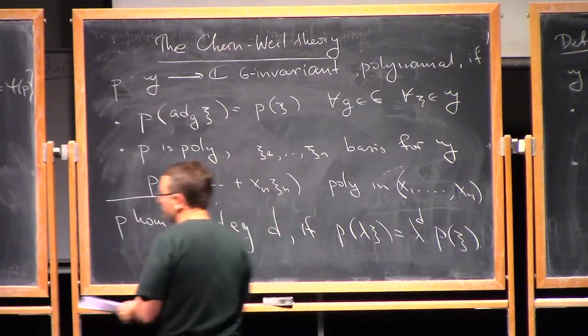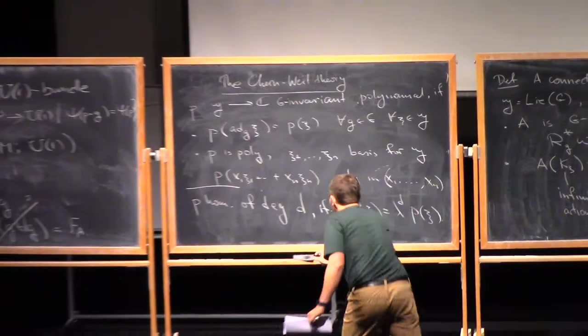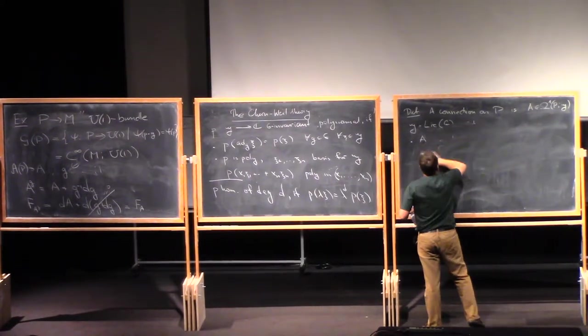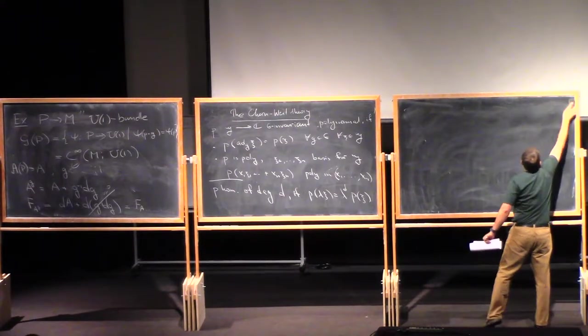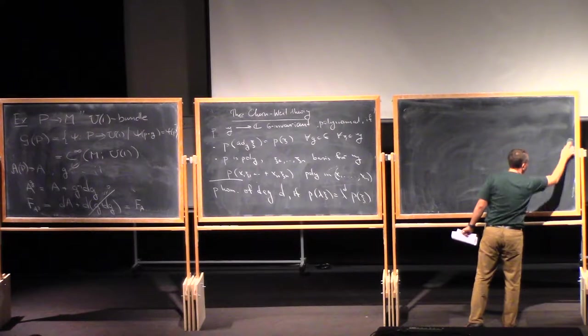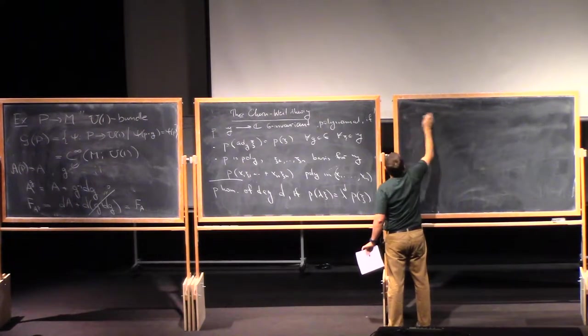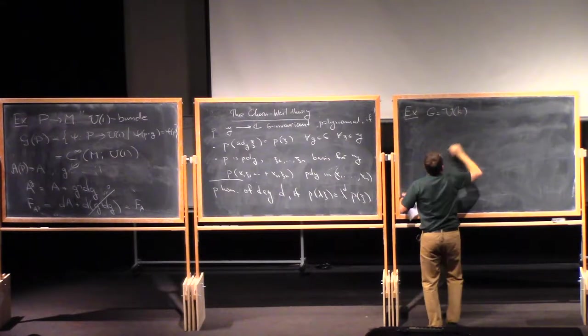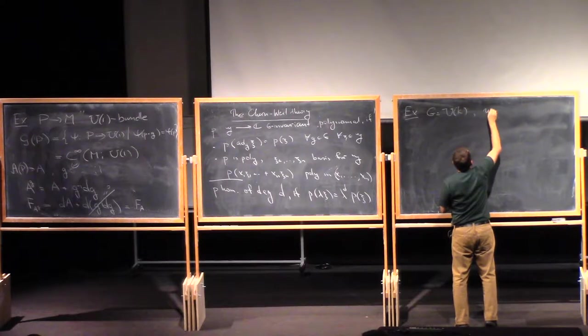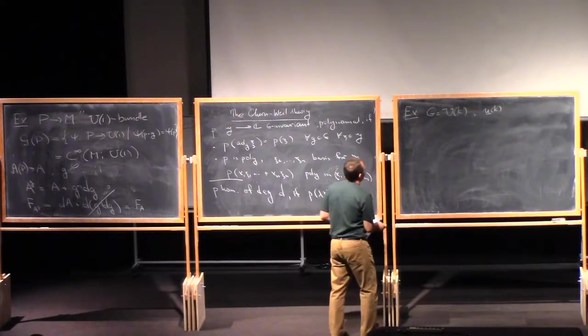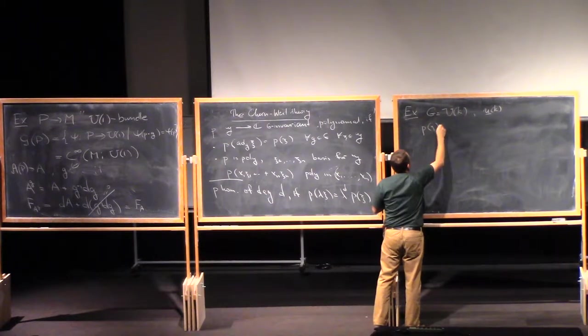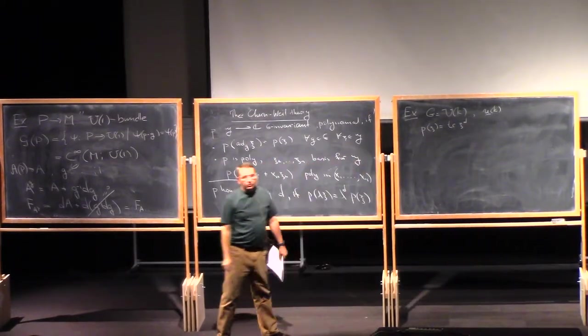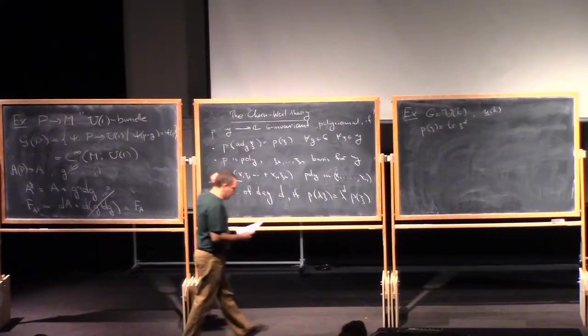So here are some examples. We will take here as an example G to be u(k), and so the corresponding Lie algebra is u(k). And we could take P of xi to be the trace of xi to the power d. And this is obviously a homogeneous polynomial of degree d.